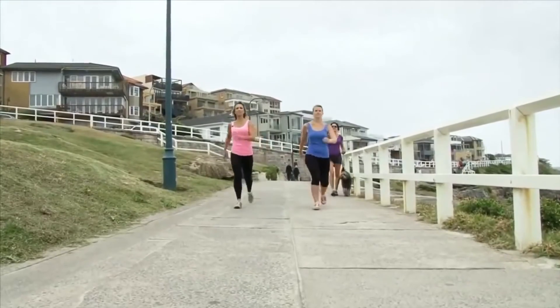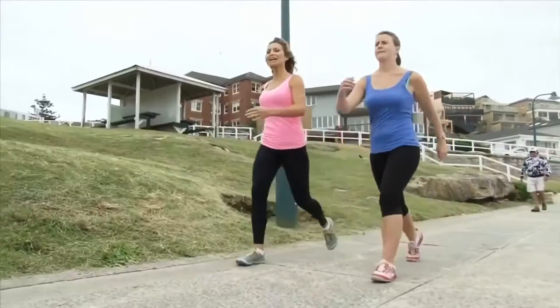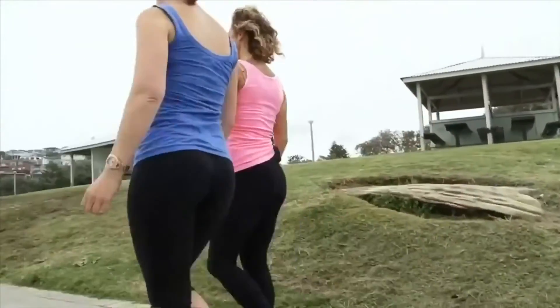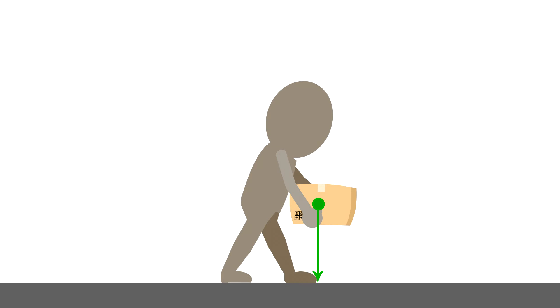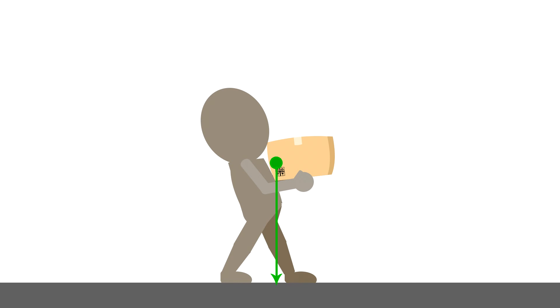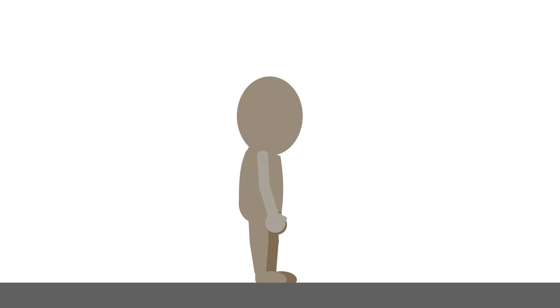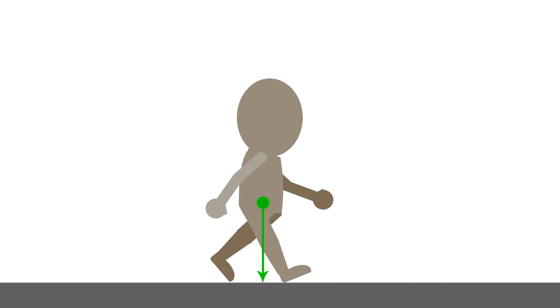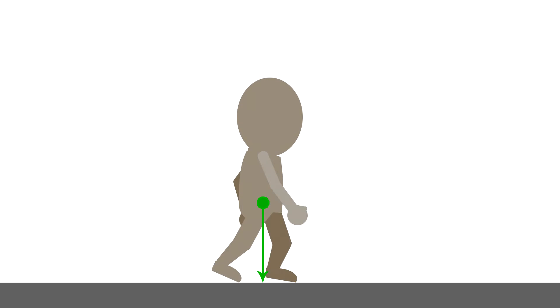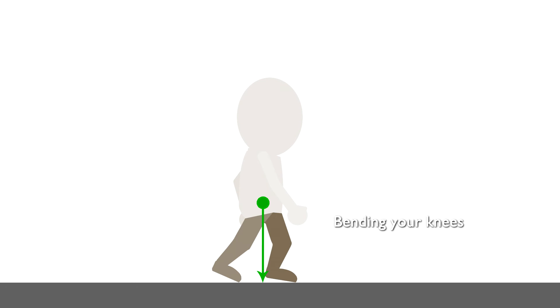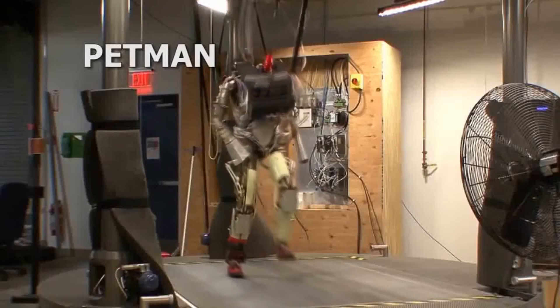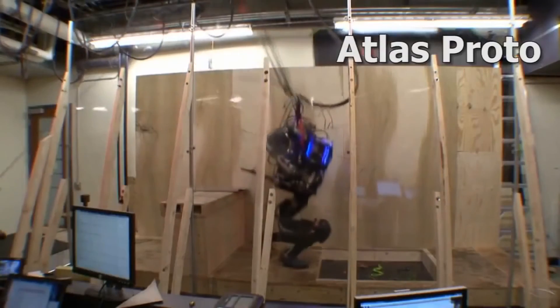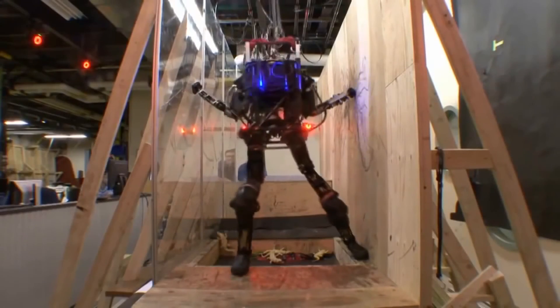Humans are dynamically stable. We maintain our balance by distributing our body weight so that the center of gravity is within the support polygon. For example, if a person is carrying a box, they will lean backwards slightly to compensate for the weight. Likewise, when you walk, you achieve balance by distributing your weight — moving your arms and bending your knees so that the center of gravity is always in the middle, hence maintaining stability. However, this is very difficult to achieve with robots, and very challenging for whoever is building and programming them.